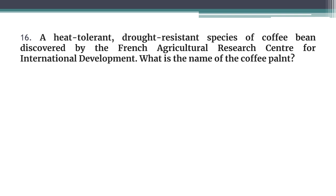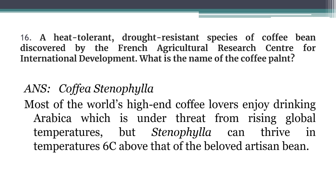Question 16: A heat-tolerant, drought-resistant species of coffee bean was discovered by the French Agricultural Research Center for International Development. The name of that coffee plant is Coffea stenophylla. Most of the world's high-end coffee lovers enjoy drinking Coffea arabica, but it is under threat from rising global temperatures as it cannot withstand high heat. However, Coffea stenophylla can thrive at temperatures 6 degrees Celsius above that of arabica, making it more temperature-resilient.